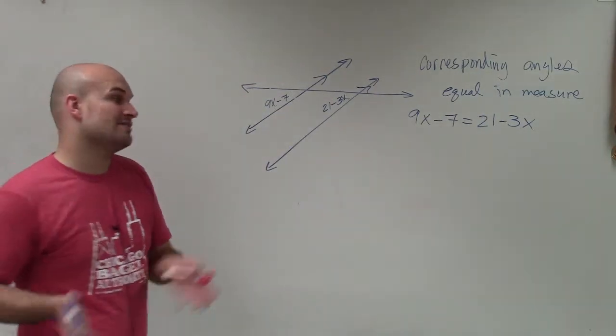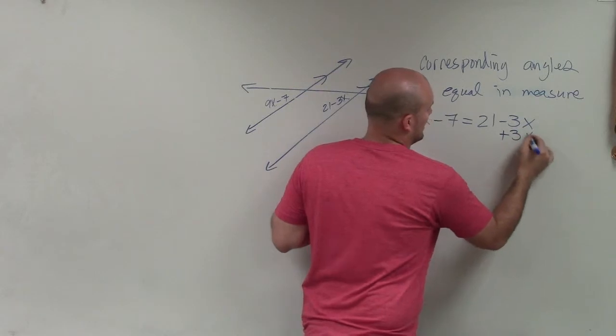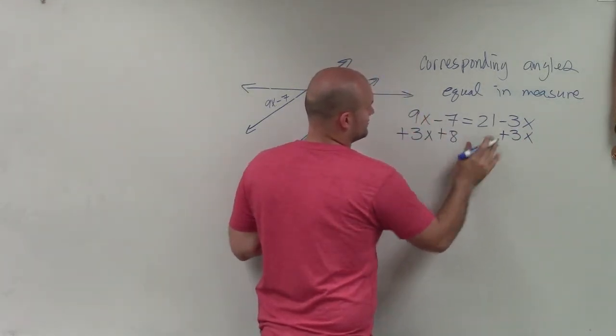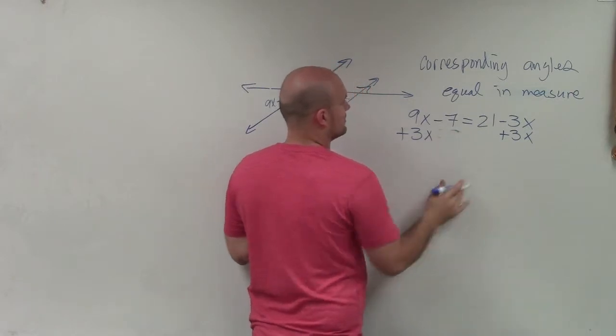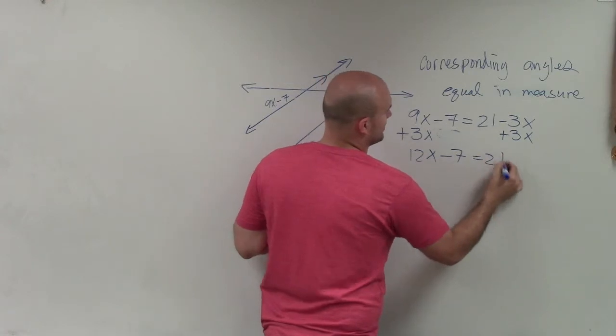Now, all I need to do is use inverse operations to solve. I will add 3x. Let's just do it one at a time. Therefore, I have 12x minus 7 equals 21.